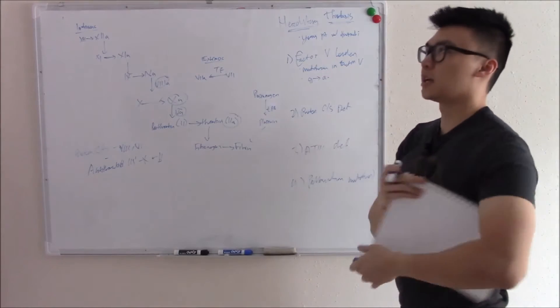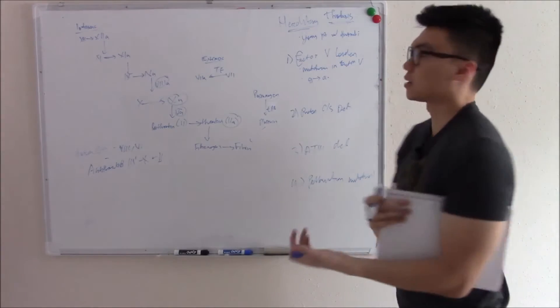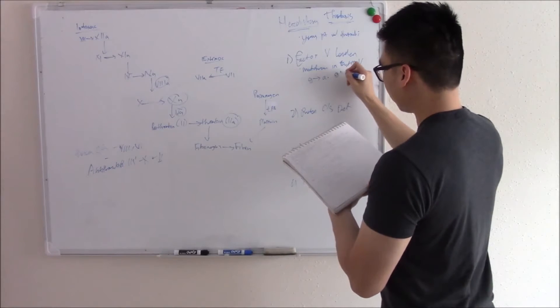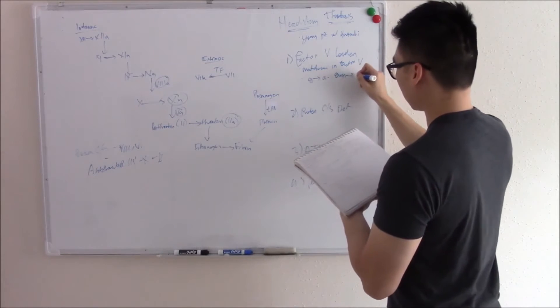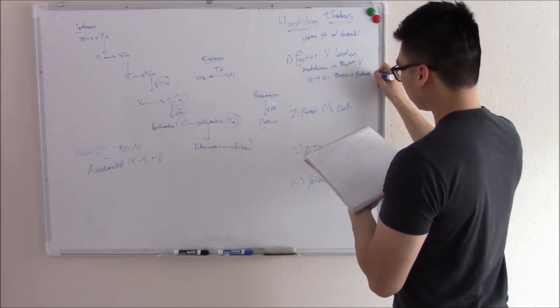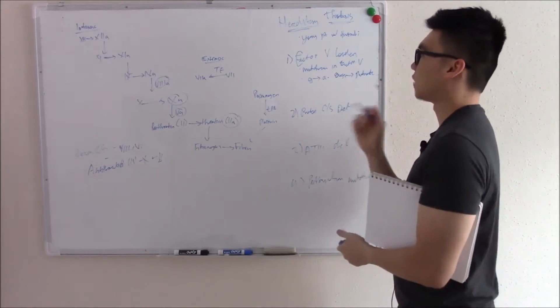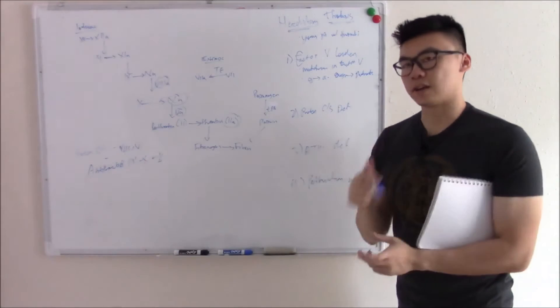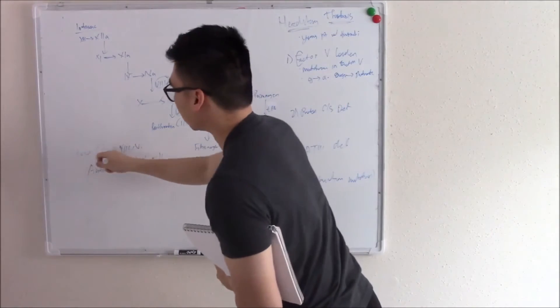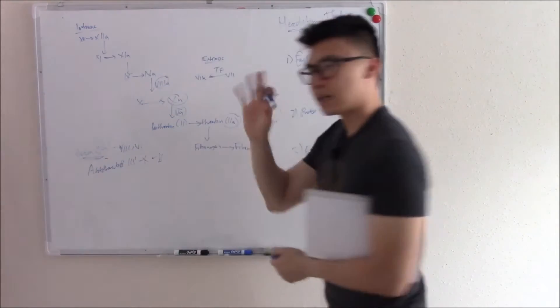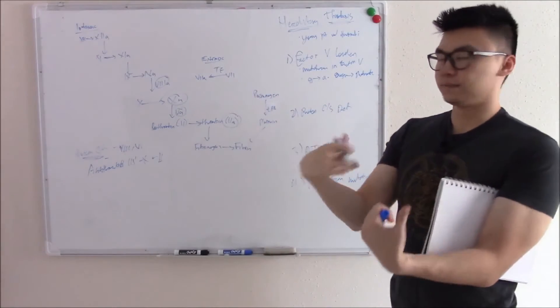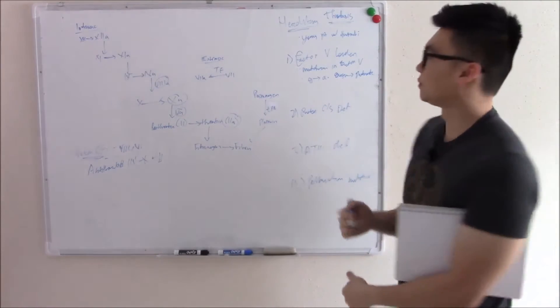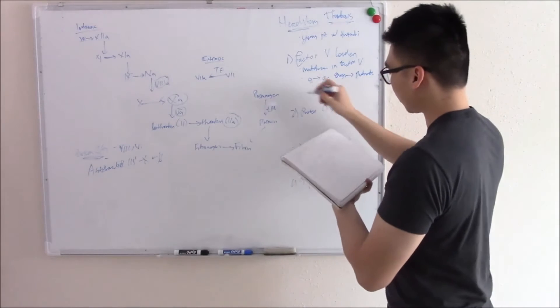And by doing that, you change the codon, the amino acid it's supposed to code for. And that goes from arginine to glutamate. That small change makes factor V very resilient to being broken down. What breaks down factor V? It'd be protein C and S. So protein C and S can no longer break down factor V. Factor V increases. You get your thrombi.